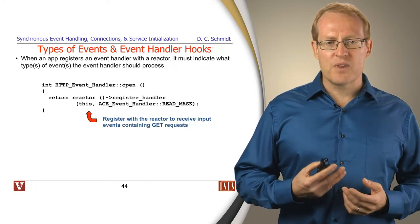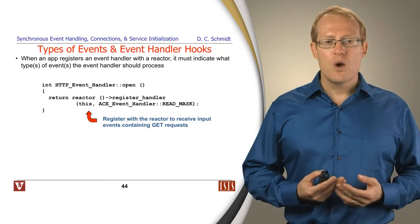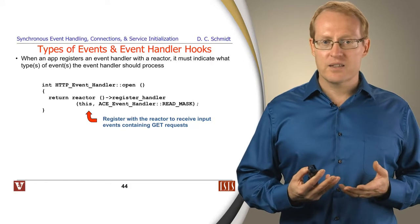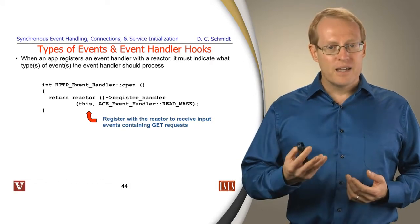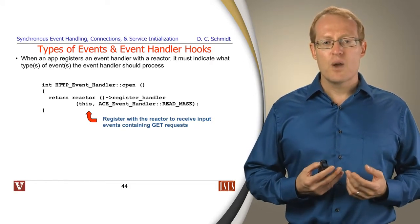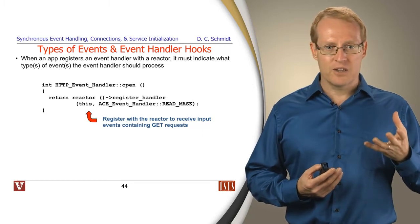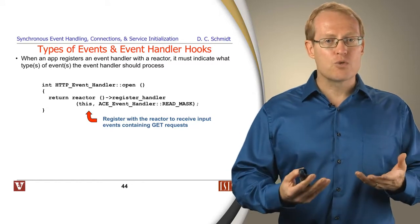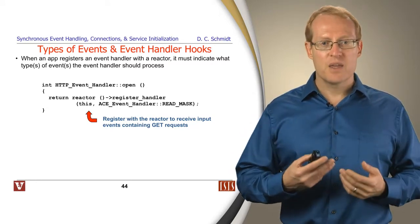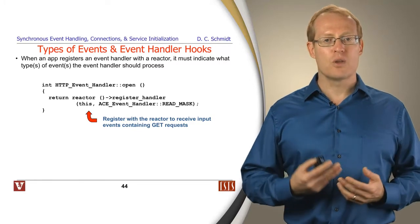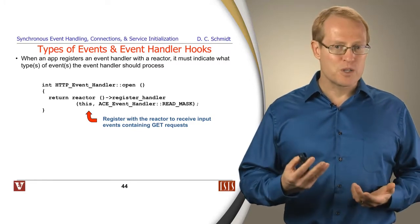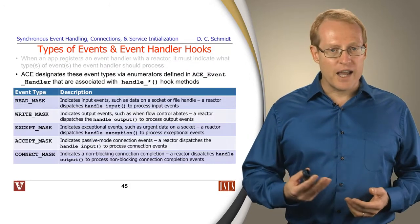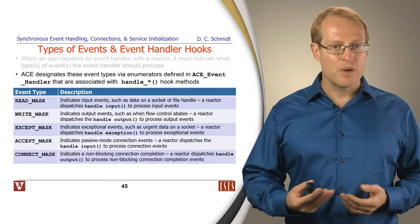Let's talk a little bit about some of the types of events and event handler hook methods. When an application registers an event handler with a reactor, it has to indicate the type or types of events it wants to be notified about. Here's a simple example we'll talk about later. When an HTTP event handler is created and initialized, it turns around and says, Reactor, please register me this to be notified when read events occur using a read mask. A read event would correspond to the arrival of a GET request from a client.